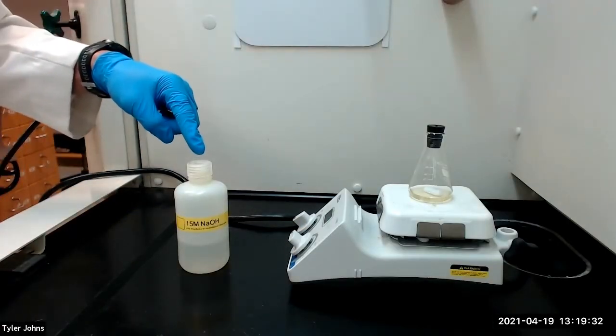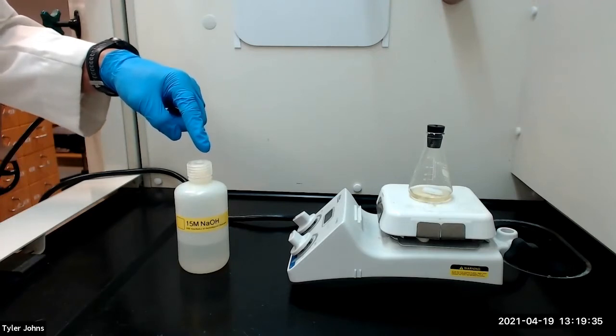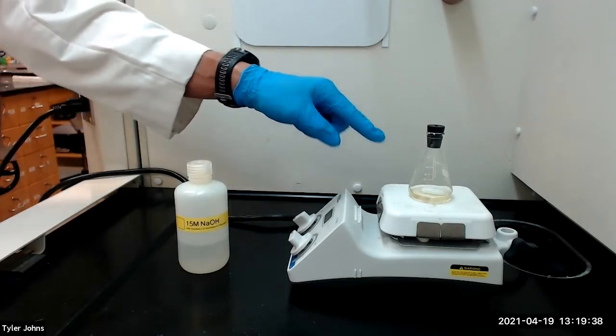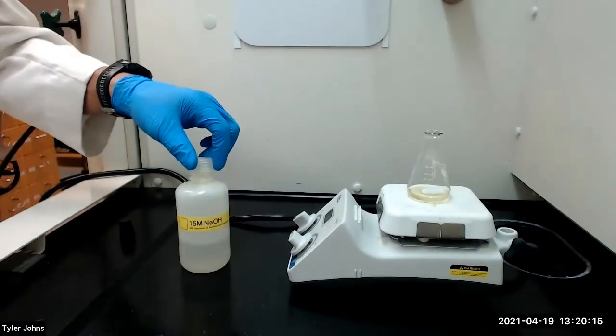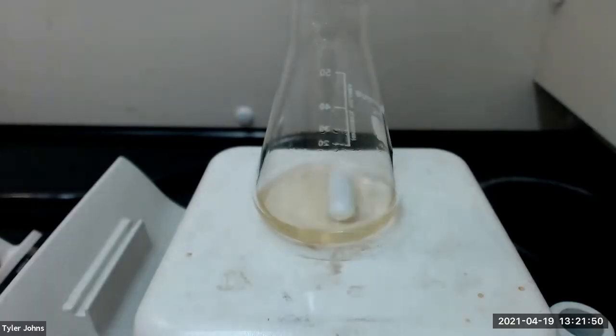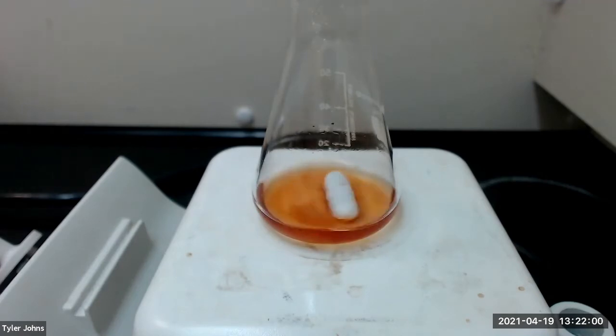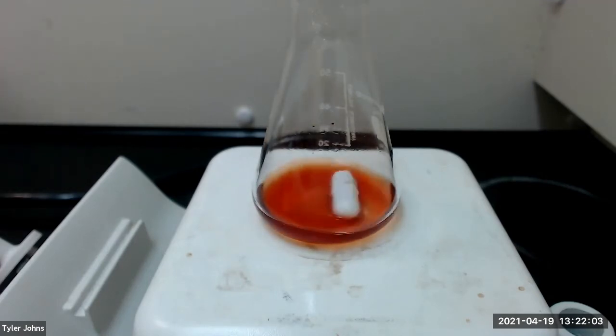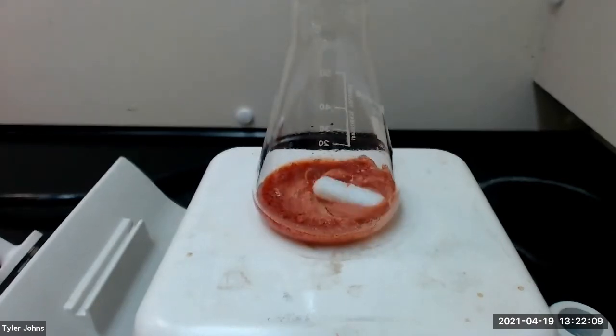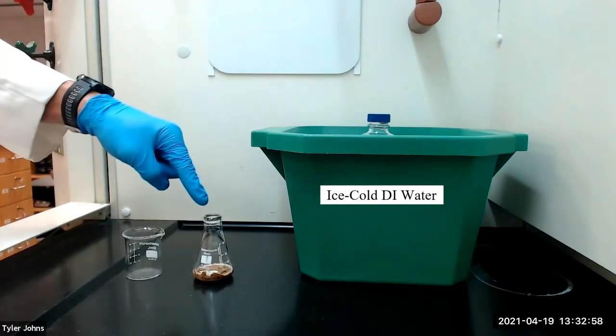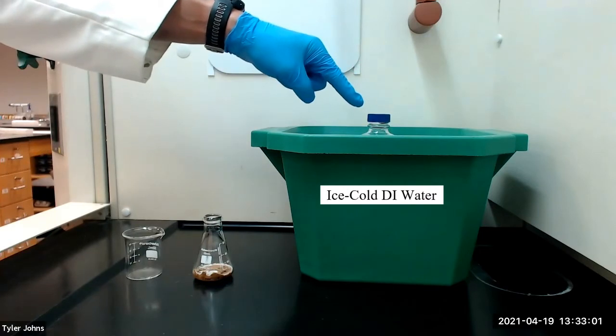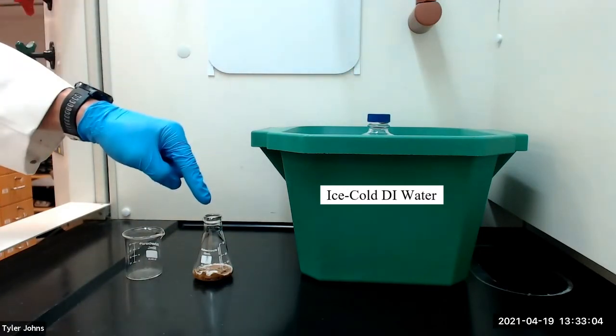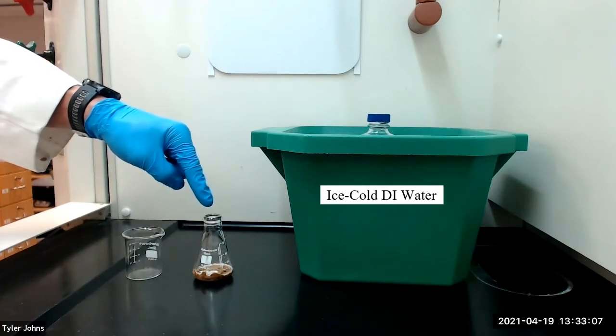We will next add 0.5 milliliters of 15 molar sodium hydroxide solution to the mixture in the flask and stir until a precipitate forms. After a solid precipitate has formed, we will add 10 milliliters of ice-cold deionized water to the mixture in the flask and stir with a micro spatula to break up the solid mass.